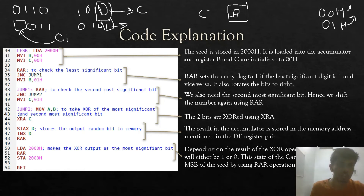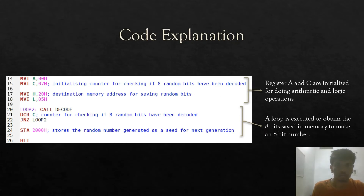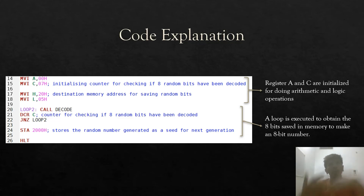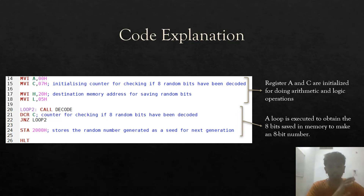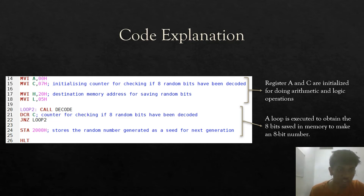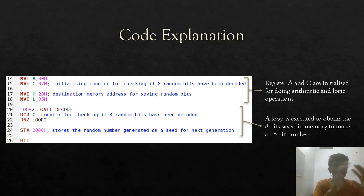This LFSR code is executed 8 times because we need 8 random bits to generate a random 8-bit number. After 8 executions we have 8 bits. Each memory address holds either 01H or 00H. We need to concatenate these and convert them into a single 8-bit number. I have initialized the various registers and called the decode function, which runs 8 times — each time reading one bit from memory and concatenating it into the main number. I will explain the decode subroutine next.